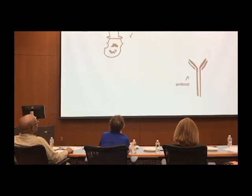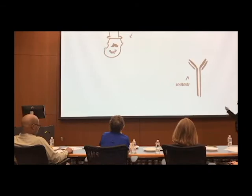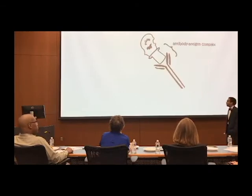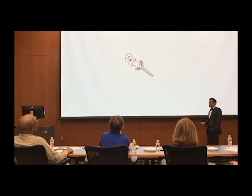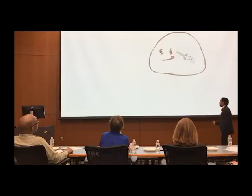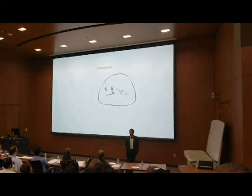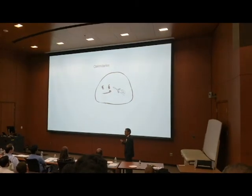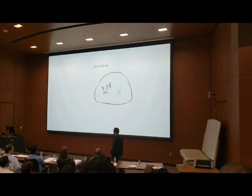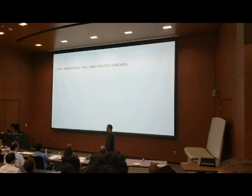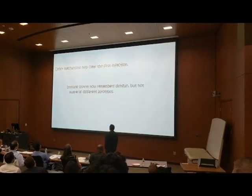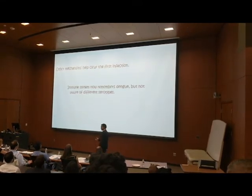Let's run through the normal antibody response again, noting the differences. You form the antibody-antigen complex, and this time the antibody is specific to, say, the top-hat serotype. Neutralization is specific, so it's effective. Then you have phagocytosis after opsonization. But this is a bad idea, because Dengue can actually survive inside the macrophage and infect it. However, other immune mechanisms are in place, so you clear the first infection.